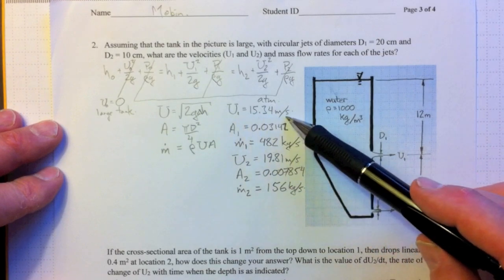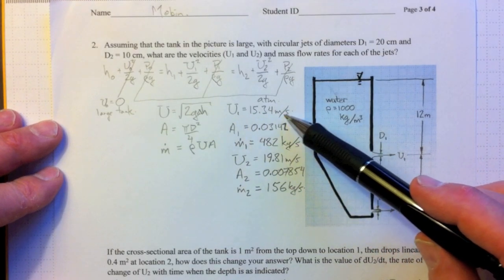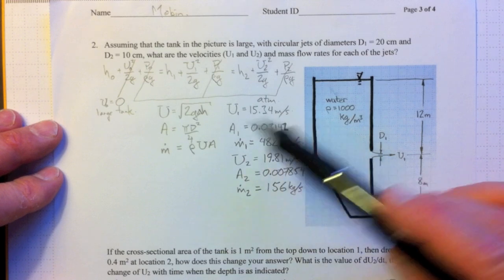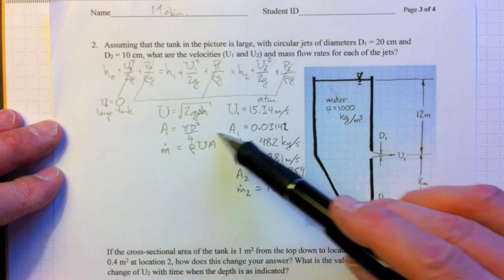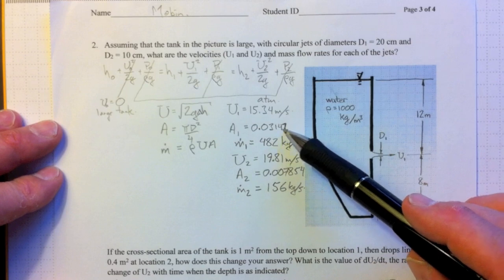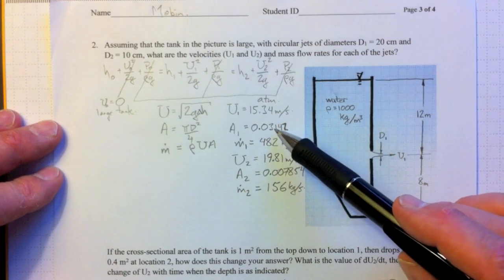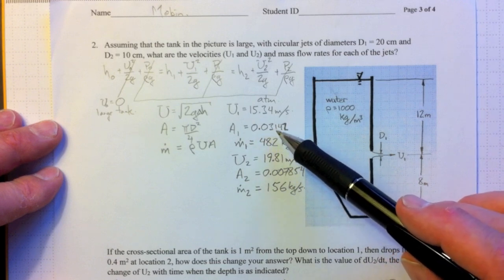And for location 1, plugging in the numbers, we get 15.34 meters per second. Area, pi d squared over 4, so the area of number 1 is 0.03142. That's one hundredth the value of pi.